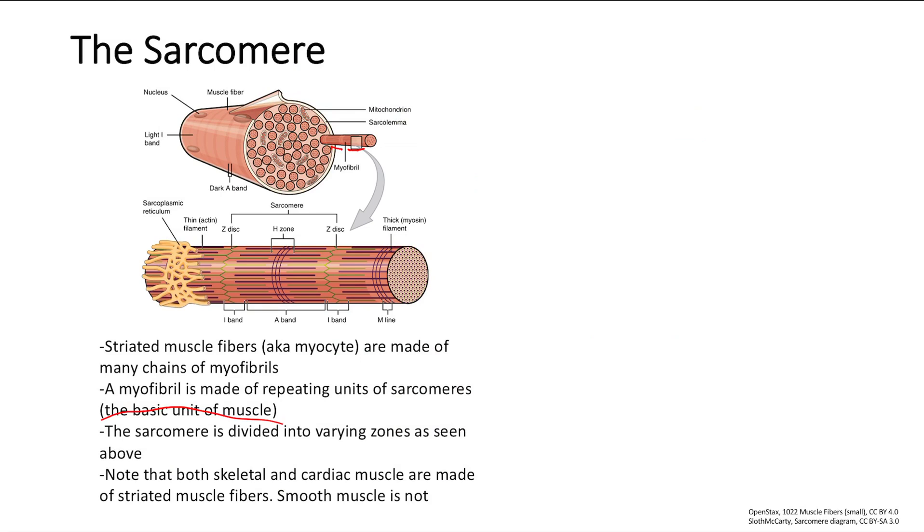And each sarcomere has varying zones. So I'm going to show you how to memorize all these zones, because you're going to get tested on them, unfortunately. Note that both skeletal and cardiac muscles are made up of striated muscle fibers. So everything we covered is just striated muscle. Smooth muscle has a totally different structure - it's just a weird structure. We're talking about skeletal and cardiac muscle here.